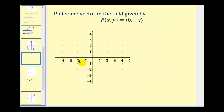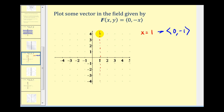For our next example, F(x, y) = ⟨0, -x⟩. We pick points on the coordinate plane and sketch the corresponding vectors. Notice each vector is only affected by the value of x. Along the vertical line x = 1, every vector has x-component 0 and y-component -1. Starting at y = 4, we plot the vector ⟨0, -1⟩, then jump down to other y-values and plot the same vector along that vertical line.